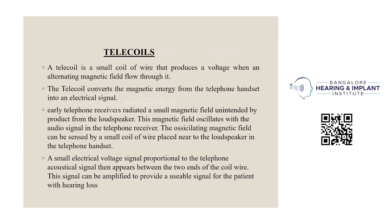Telecoils are small coils of wire that produce a voltage when an alternating magnetic field flows through them. They convert the magnetic energy from the telephone handset into an electrical signal directly. Electrotelephone receivers radiate a small magnetic field produced by the loudspeaker. This magnetic field oscillates with the audio signal in the telephone receiver. The oscillating magnetic field can be sensed by a small coil of wire placed near the loudspeaker in the telephone handset. A small electrical voltage signal proportional to the telephone acoustic signal appears between the two ends of the coil wire, which can then be amplified to provide a usable signal for the patient with hearing loss.